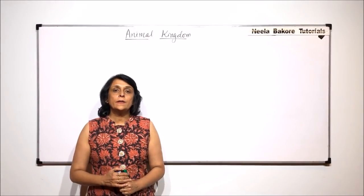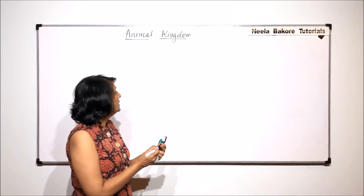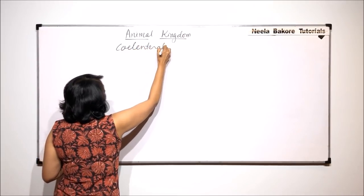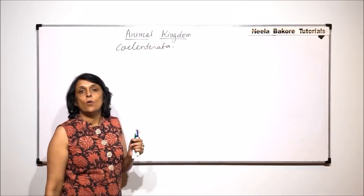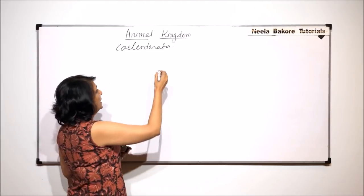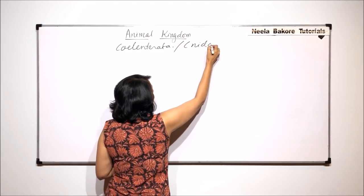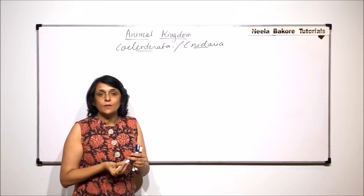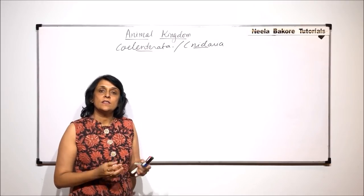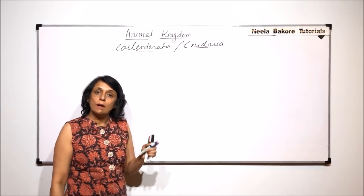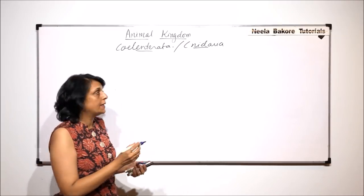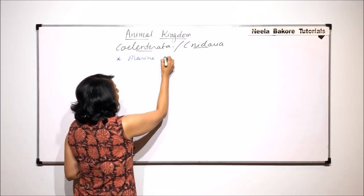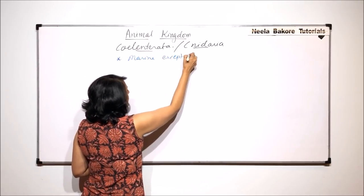We will now start with the next phylum in animal kingdom, that is Coelenterata. Now, this word Coelenterata is the old name of this phylum. It is nowadays known as Cnidaria. Whether we call it Coelenterata or Cnidaria, it's one and the same thing. One is a recent name, the other is an older one. Both are used commonly. Coelenterates are mostly marine except Hydra. Hydra is found in fresh water also.